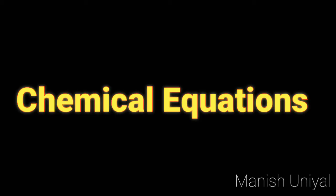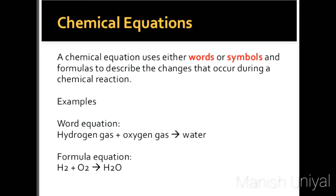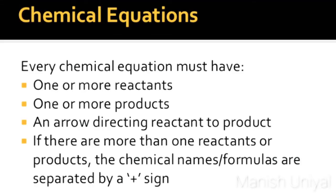What is a chemical equation? A chemical reaction is often described by writing a chemical equation. A chemical equation uses either words or symbols and formulas to describe the change that occurs during a chemical reaction. For example, a word equation is: hydrogen gas reacts with oxygen gas to give water. In a chemical equation, every chemical equation must have one or more reactants, one or more products, and an arrow directing reactant to product. If there are more than one reactants or products, the chemical names or formulas are separated by a plus sign.